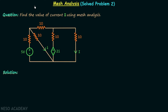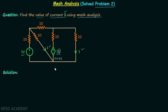Now we have a clear understanding of the basics of mesh analysis. In this lecture we are going to solve problem number 2, in which the given network has one dependent voltage source and we are required to find the value of current i using mesh analysis. Current i is the current flowing in this branch. We have two sources: an independent voltage source providing 5 volts, and a dependent voltage source providing voltage equal to 2 times i, making it a current-controlled voltage source.